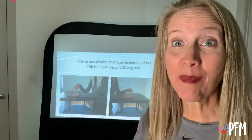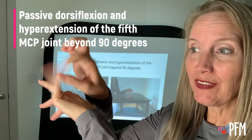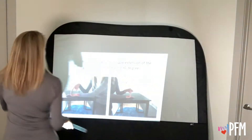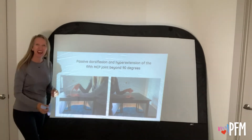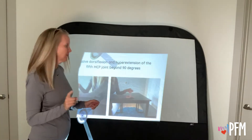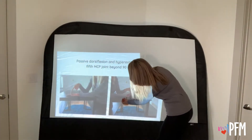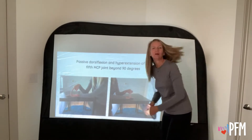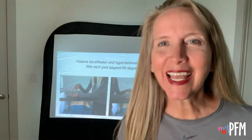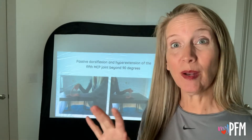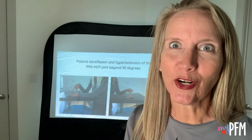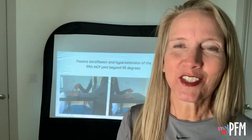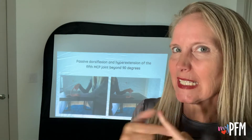The first motion we're measuring is passive dorsiflexion and hyperextension of the pinky MCP joint beyond 90 degrees. On my left, it is right at 90 degrees, so it is not positive on my left. On my right, it's a little bit past — about three degrees past 90 degrees — so it would be positive on my right. I actually broke bones in my left hand playing dodgeball a couple of years ago, and I know I have less mobility and some stiffness and tightness in that joint.